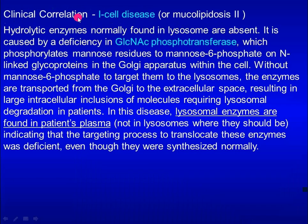Here is a clinical correlation. In I-cell disease, lysosomal enzymes normally found in lysosomes are absent. It is caused by a deficiency in N-acetylglucosamine phosphotransferase, which phosphorylates mannose residues to mannose-6-phosphate on N-linked glycoproteins in the Golgi apparatus. Without mannose-6-phosphate to target them to the lysosome, the enzymes are transported from the Golgi to the extracellular space. This results in large intracellular inclusions of molecules requiring lysosomal degradation in patients.